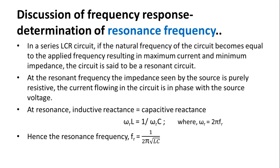At the resonant frequency, the impedance seen by the source is purely resistive, and the current flowing in the circuit is in phase with the source voltage. This is because at resonance, inductive reactance equals capacitive reactance. Equating the two: ωᵣL = 1/ωᵣC, where ωᵣ = 2πFᵣ and Fᵣ is the resonant frequency. Simplifying, we get Fᵣ = 1 / (2π√(LC)).